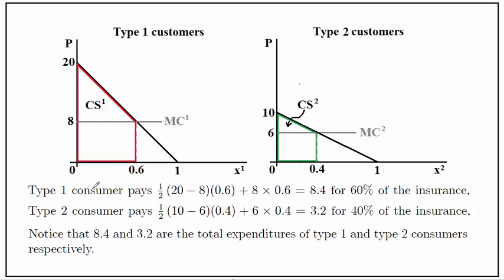Type 2 customer will pay the area of this triangle, which is one half of (10 minus 6) multiplied by 0.4, plus the area of this rectangle, which is the cost — 6 multiplied by 0.4. So that results in 3.2 for 40% of the insurance coverage for type 2 customers.